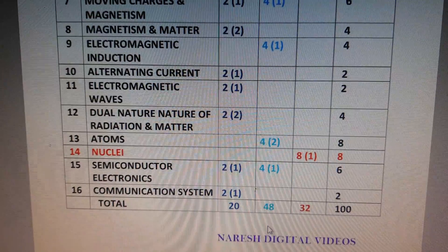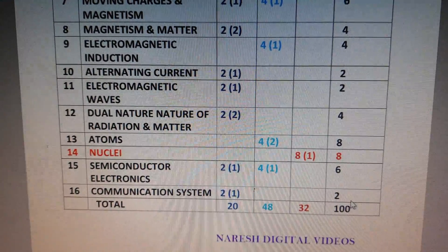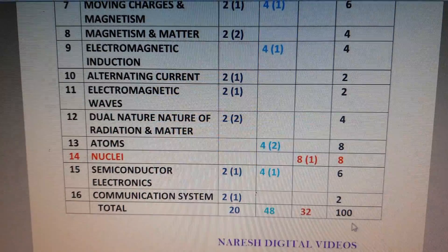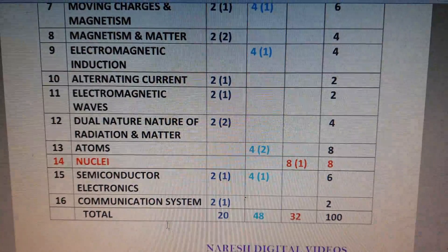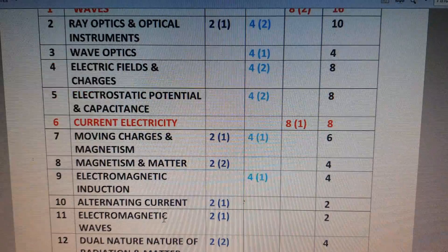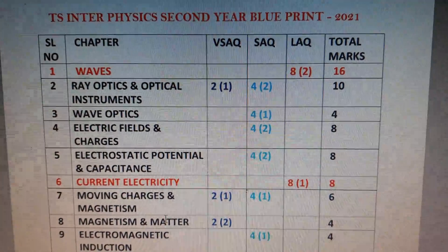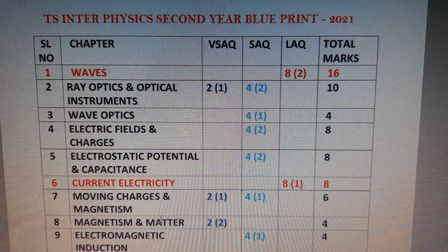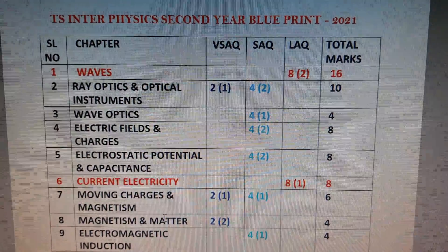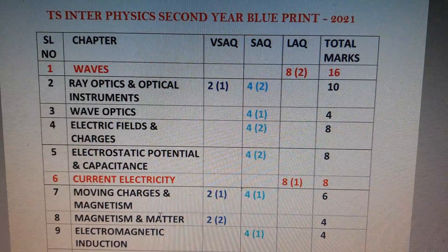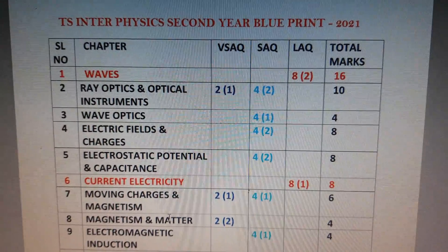The total paper with choice is 100 marks, but the student needs to attempt only 60 marks. In this video we learned about the blueprint — how many 2-mark, 4-mark, and 8-mark questions are asked chapter-wise. In the next video I will explain the most important 4-mark and 8-mark questions. Thank you, students.